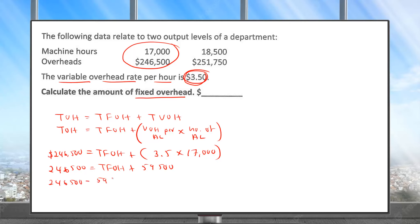Setting up the equation: 246,500 equals total fixed overhead plus 3.5 multiplied by 17,000, which gives 59,500. So total fixed overhead equals 246,500 minus 59,500, which gives us a value of 187,000. The fixed overhead amount is $187,000.